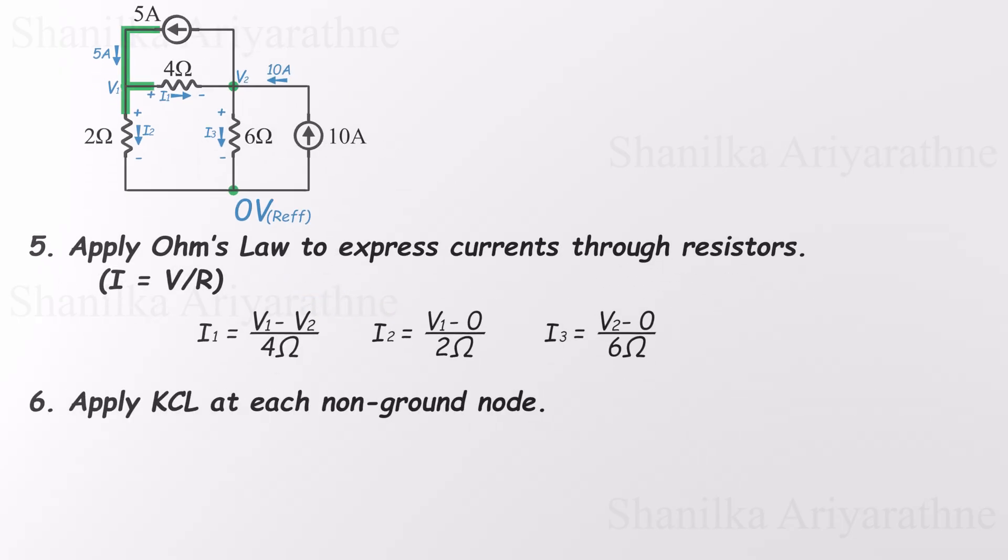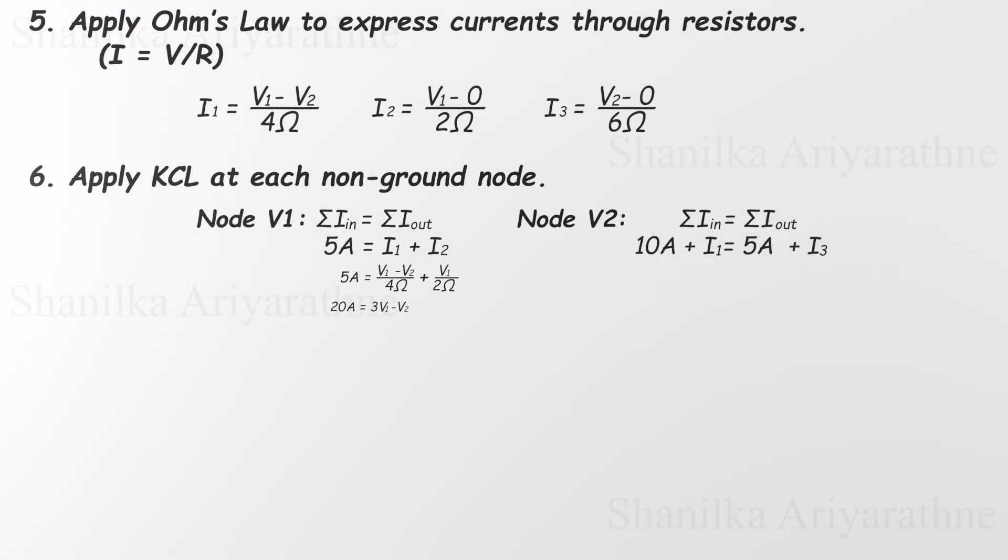At the first node, we apply Kirchhoff's current law. 5 amps flow in, while I1 and I2 flow out. So our equation is 5 equals I1 plus I2. At the second node, both 10 amps and I1 flow in, while 5 amps and I3 flow out. That gives us 10 plus I1 equals 5 plus I3. Now we substitute the expressions for I1, I2, and I3 using Ohm's law. Plugging these into the equations gives us two equations with two unknowns, V1 and V2.